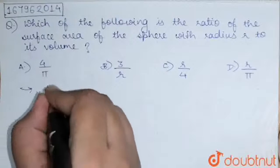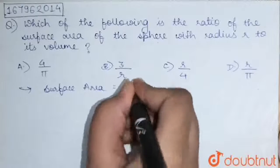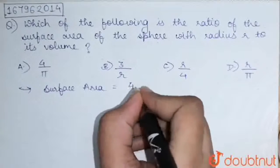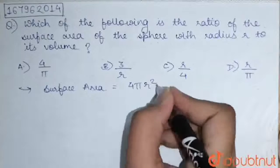Now, what is the surface area of a sphere? That is equal to 4 pi r square.